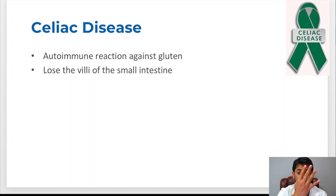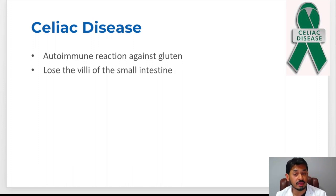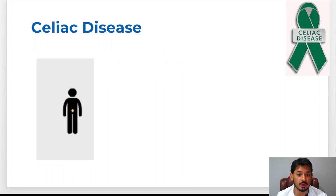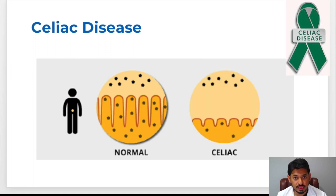Our small intestine has these villi — just like my hands — and they are used to absorb certain nutrients, vitamins, and minerals. Whenever you ingest gluten and you have celiac, these villi get sheared off so you don't have them anymore. Because of that you have difficulty or the inability to absorb those vitamins, minerals, and nutrients. So whenever you ingest food with a normal small intestine it gets absorbed through the villi, but with celiac disease the gluten gets rid of those villi so you cannot absorb those nutrients like you did before.